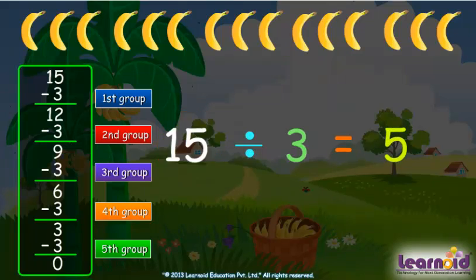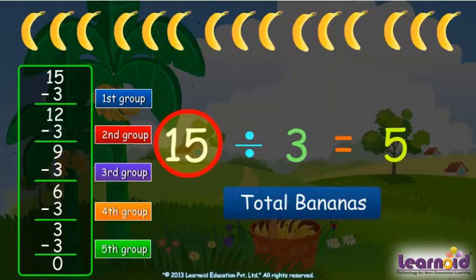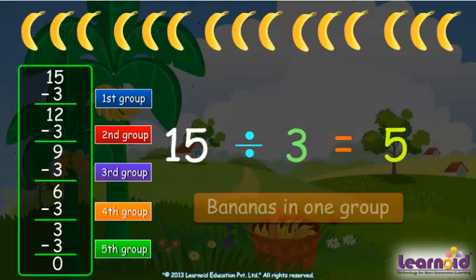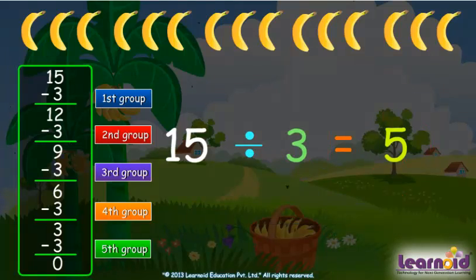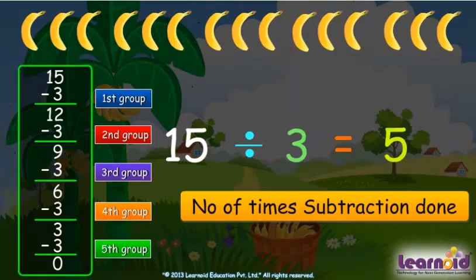15 is the total number of bananas. Three is the number of bananas in one group. Five is the number of times subtraction was done.